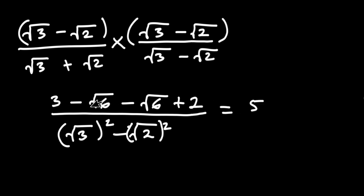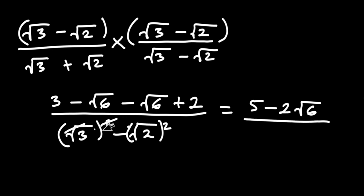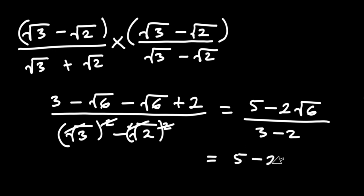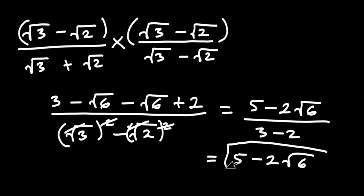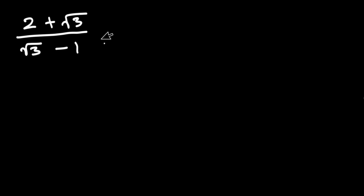Simplifying: 3 plus 2 equals 5, and negative root 6 minus root 6 equals negative 2 root 6, giving us 5 minus 2 root 6 on the numerator. On the denominator, square root of 3 squared minus square root of 2 squared leaves us with 3 minus 2 equals 1. Any number divided by 1 is itself, so the final answer is 5 minus 2 square root of 6.